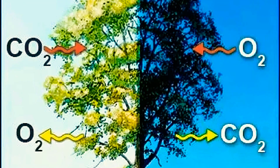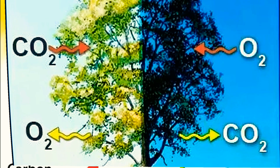Plants convert carbon dioxide and oxygen through the process of photosynthesis. Plants absorb carbon dioxide from the atmosphere during photosynthesis. A small amount of carbon dioxide is released during leaf respiration and intake of oxygen, but it is quickly reabsorbed during photosynthesis.